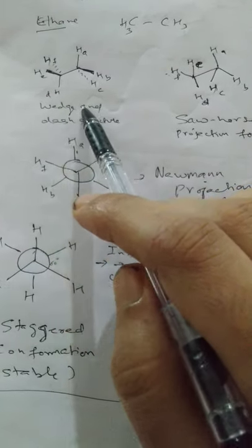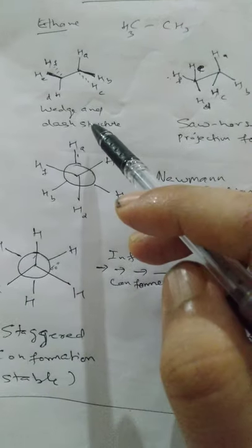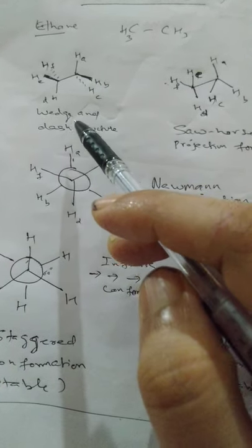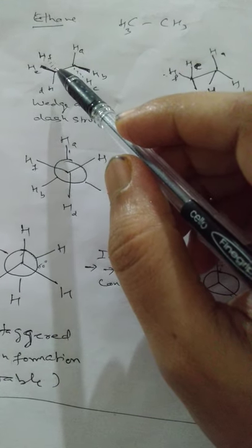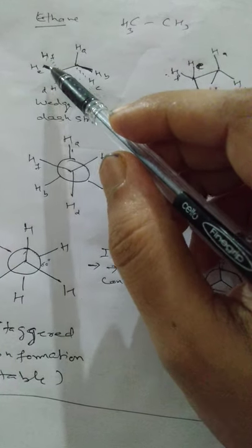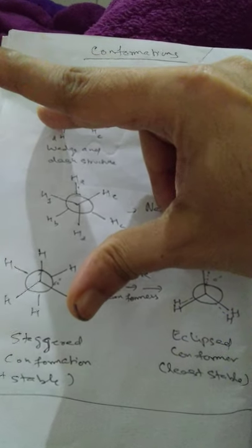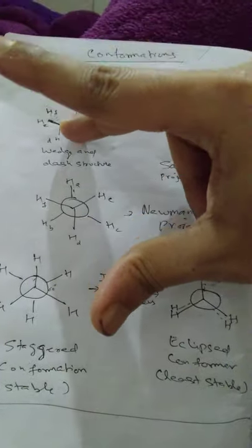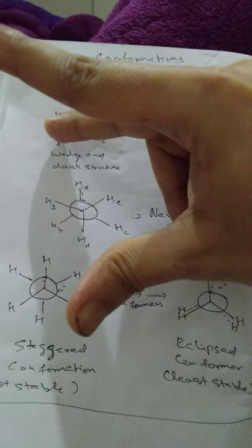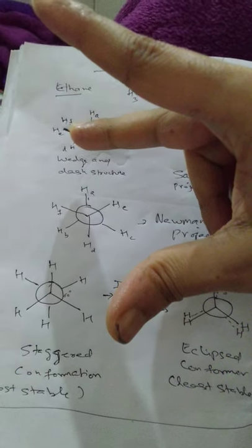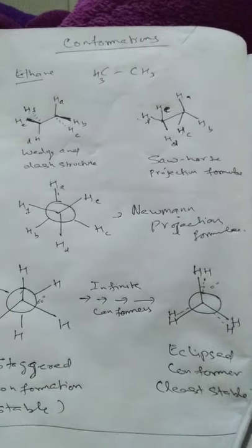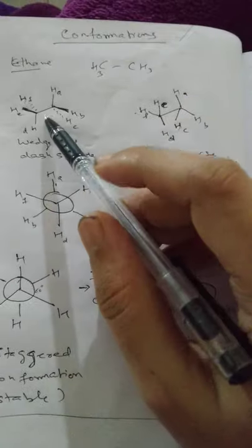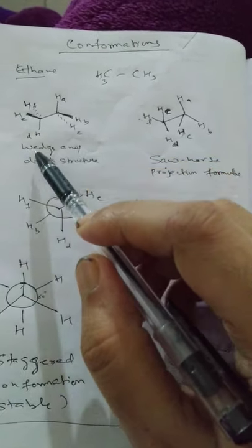Most of the time we write in wedge and dash structure — that's the wedge and dash projection formula. To understand ethane, you must recognize that the bond angle is 109 degrees. The hydrogen in the plane, one hydrogen coming towards the viewer (wedge), and one going away (dash) — it's bent like a katora (bowl), not straight.